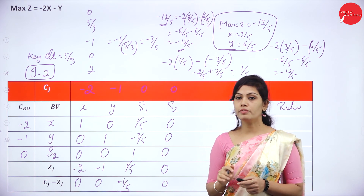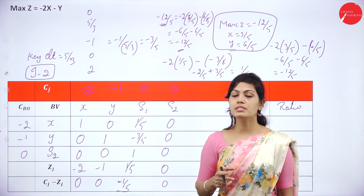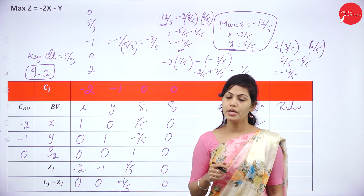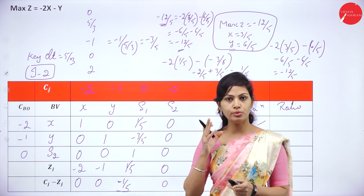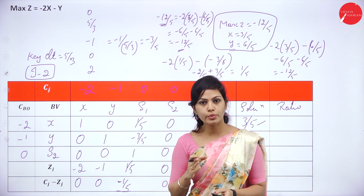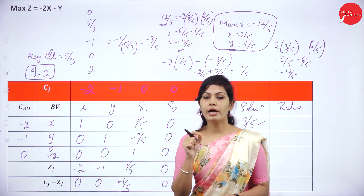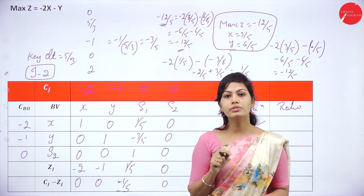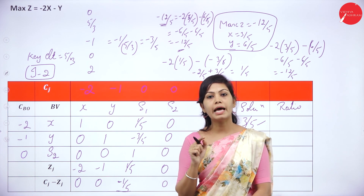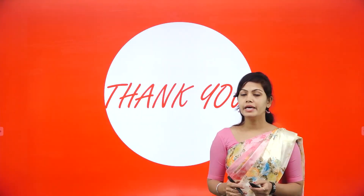So this is about the Big M method. If you know the concept of simplex method, you can easily solve Big M method. For converting inequality to equality, subtract the surplus variable and add an artificial variable for greater-than-or-equal constraints; add only the artificial variable for equal-sign constraints. In my next session, I will come with another example. Thank you.